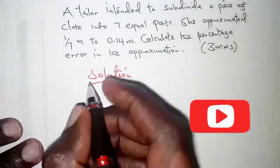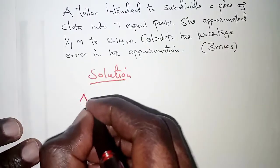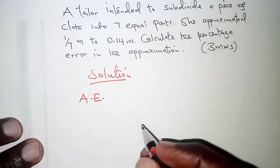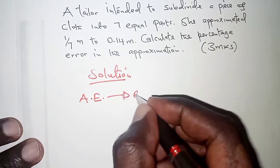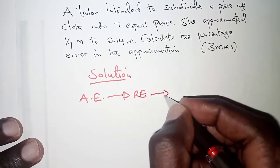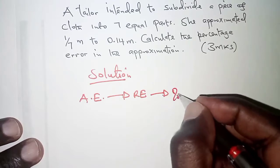In summary, we are going to get the absolute error, and from the absolute error we should get the relative error, and the relative error leads us to the percentage error.